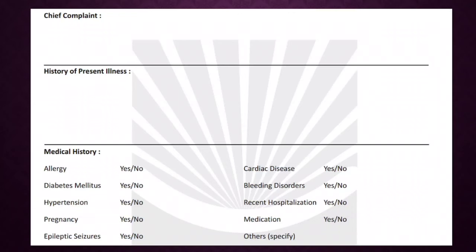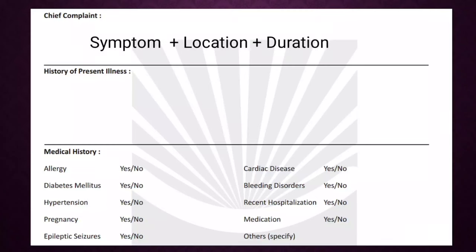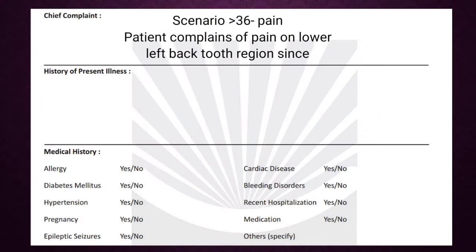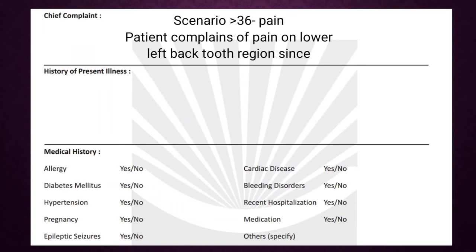Next is the chief complaint, which should be mentioned in the patient's own words. The chief complaint has three parts: the symptom, the site where it is seen, and the duration. For example, if a patient has pain related to tooth 36, you should not mention the tooth number since the patient doesn't know it. Instead, describe it as: the patient is complaining of pain in the left lower back tooth since however many days.